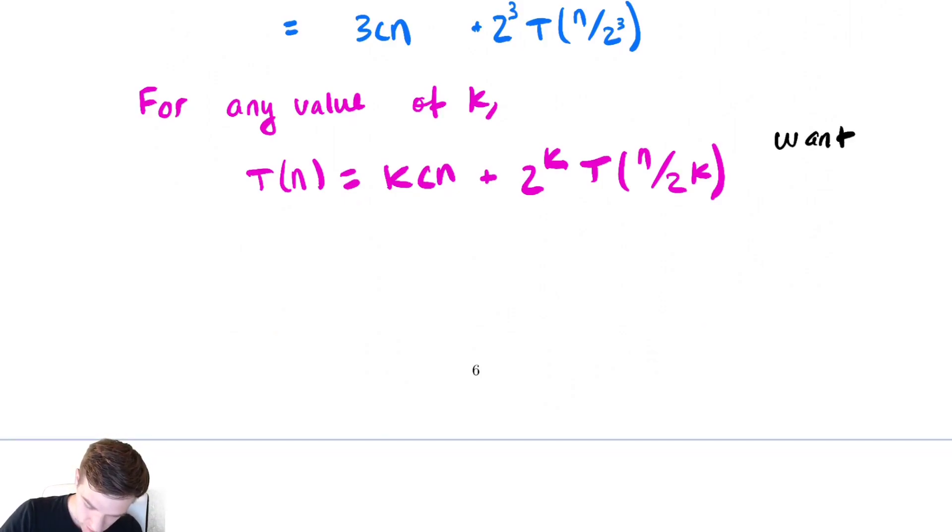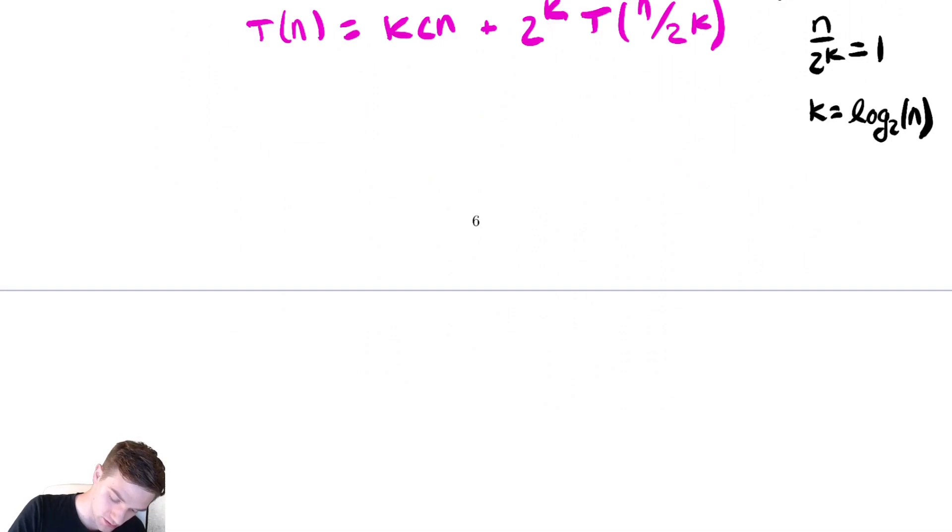We want n over two to the k. The thing inside of the T is equal to our base case, which is one. Solve that for k and we get k equals log base two of n. Whenever we're dealing with recursion, we may need to be careful so we aren't going to throw that log base. We're going to actually keep it around.